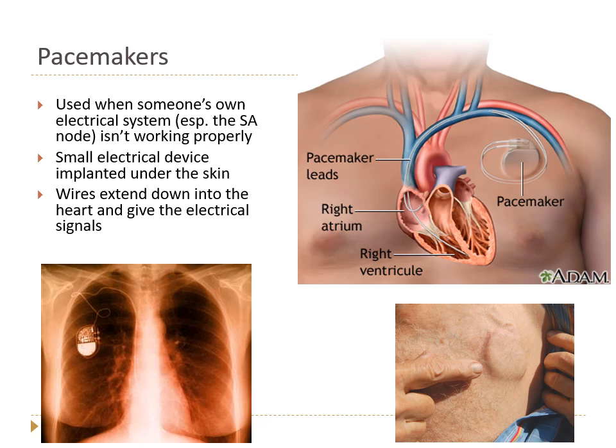If the SA node or AV node aren't working properly, many people will get a pacemaker — a small electronic battery-powered device placed underneath the skin of the chest, with wires that go through the subclavian vein and brachiocephalic vein, down through the superior vena cava into the heart. One wire typically goes to where the SA node normally is, and sometimes another goes down into the ventricle. You can see on this x-ray the device placed under the skin, and it works by sending tiny electric shocks into the heart to tell it when to beat.